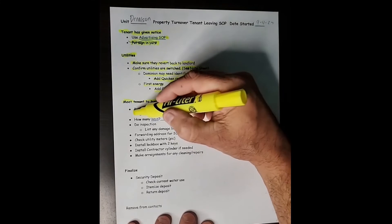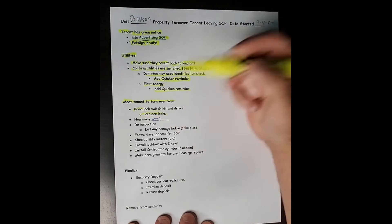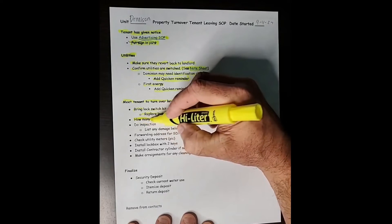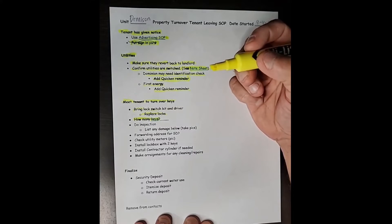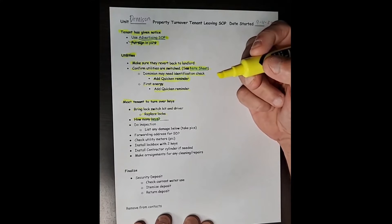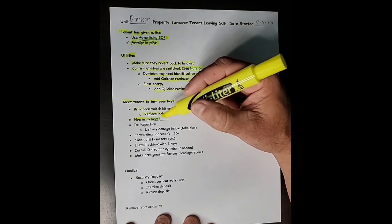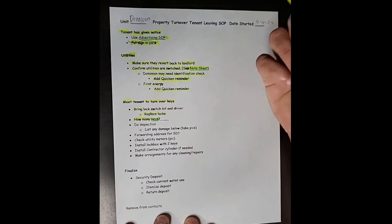So I switch those out and make sure I highlight these when that's done. I replace the locks. I have a sheet here that tells me how many keys I gave that tenant. It's usually just two. But sometimes I'll request another if they have teenagers in the house or for whatever reason. But I usually give two. But I make sure I get those two back or I charge them.